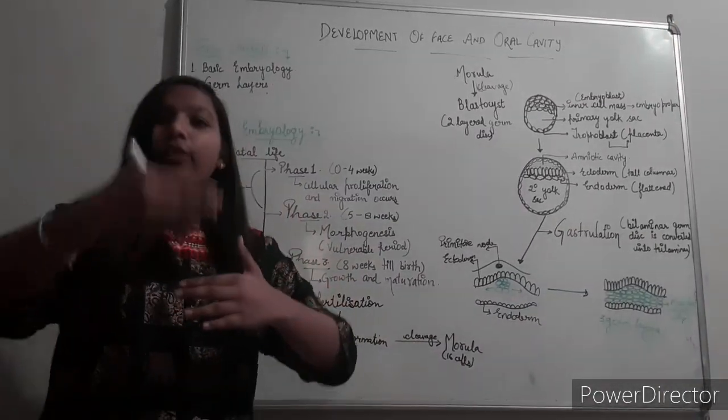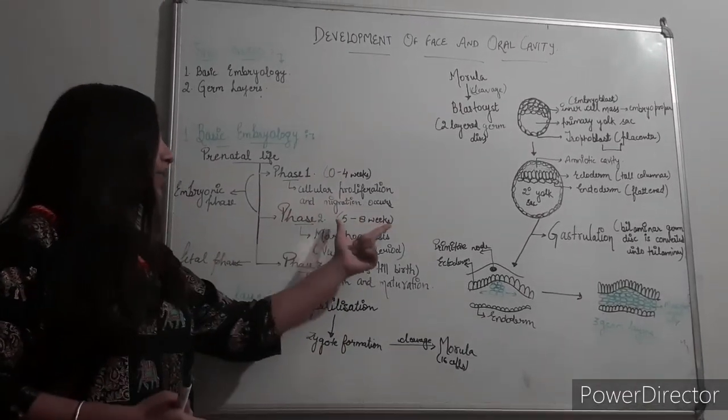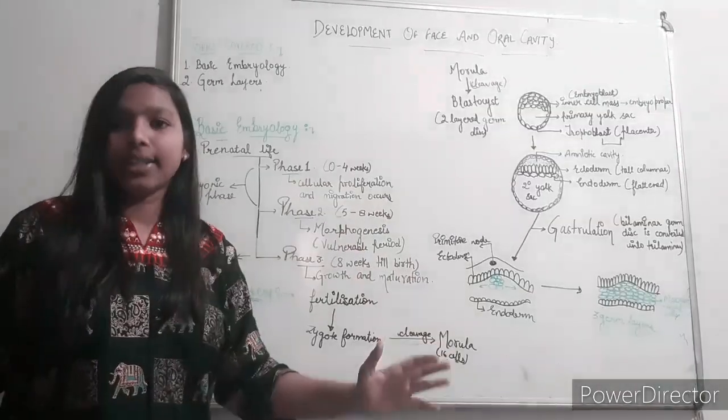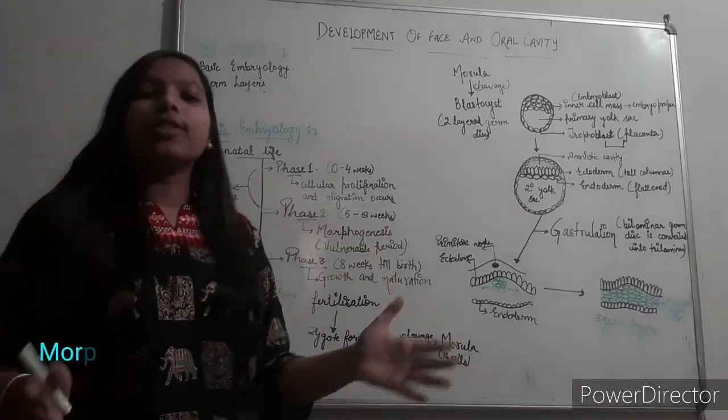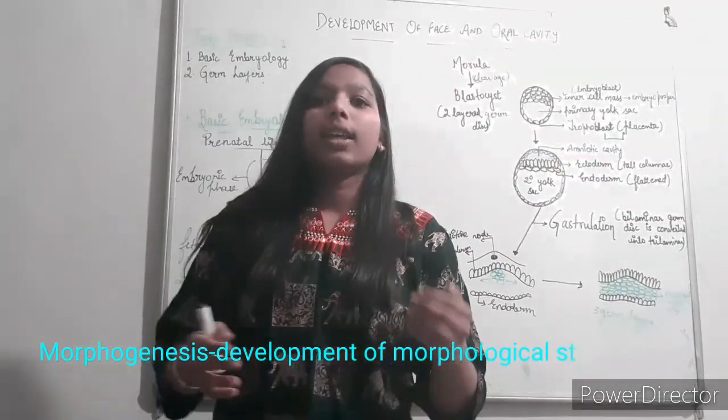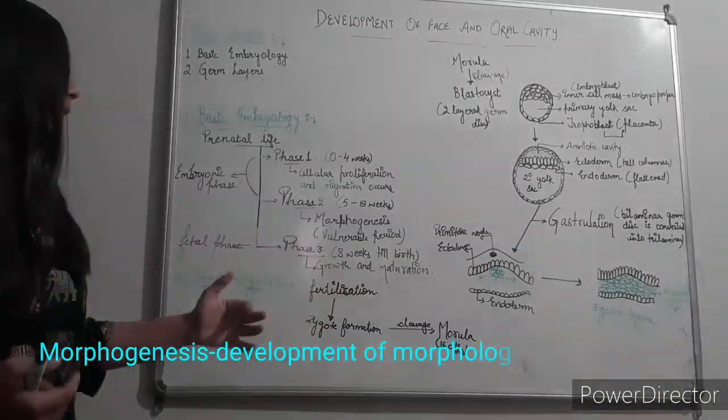Then in phase two, which takes place from five to eight weeks, it consists of morphogenesis. Morphogenesis means the development of morphological characters.